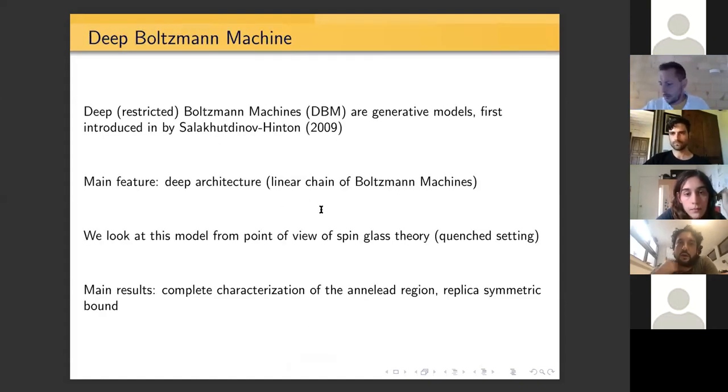We will talk about the deep, sometimes called restricted Boltzmann machine, introduced by Ackley and Sejnowski in 2009. We will focus mainly on the deep architecture of this model that we can think of as a linear chain of Boltzmann machines. We look at the model from the point of view of spin glass theory, fixing the couplings to be quenched and trying to understand the phase diagram. I will show a complete characterization of the annealed region and the replica symmetric bound.